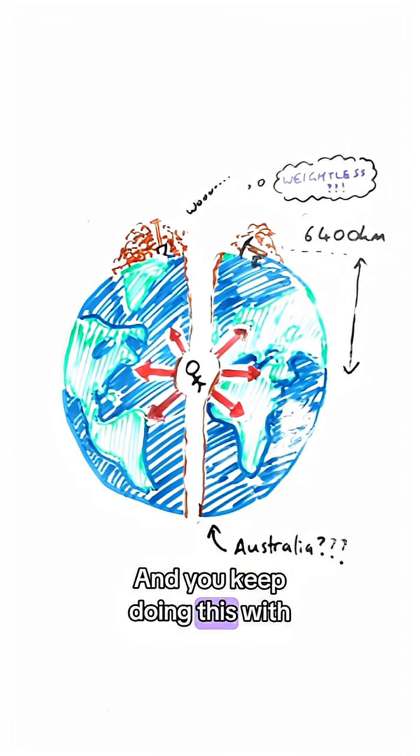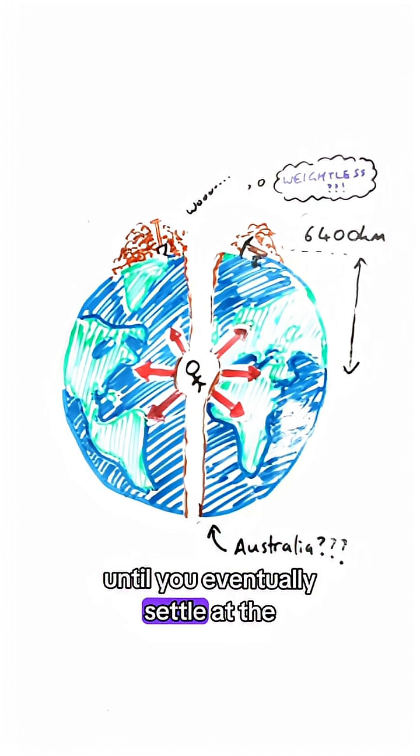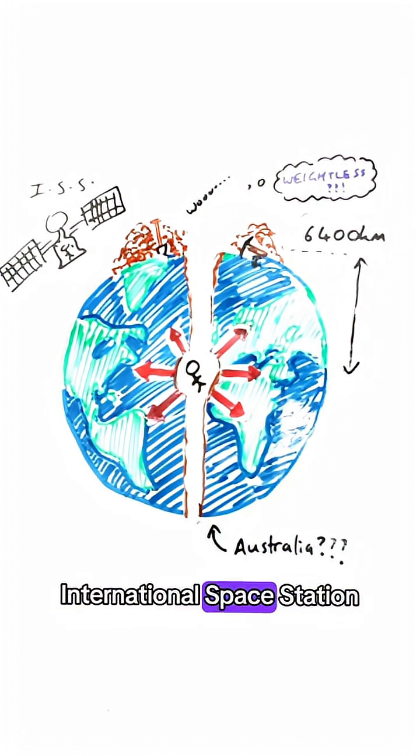And you'd keep doing this with a time period of 42 minutes to go from one side of the earth to the other until you eventually settled at the center, where you'd be in this weightless orbit, just like you were on the International Space Station.